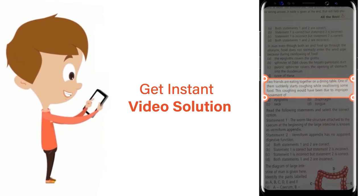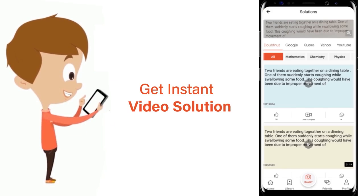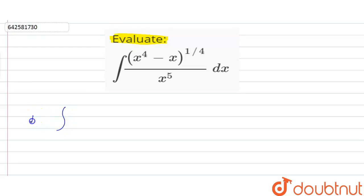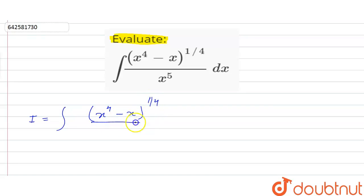We have to evaluate the given integral. Let it be I, so I is the integral of x raised to power 4 minus x, whole power 1 by 4, upon x raised to power 5, dx.